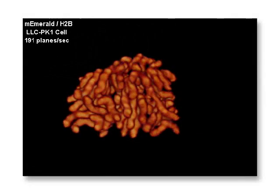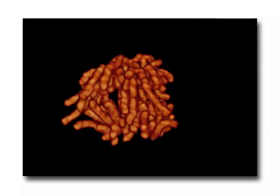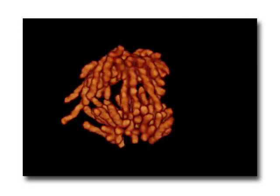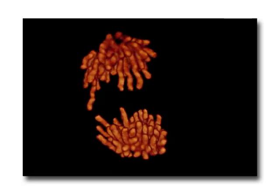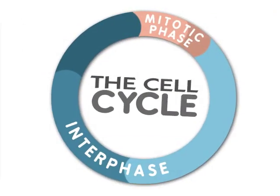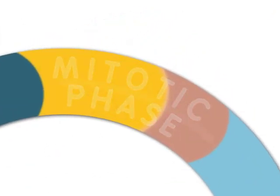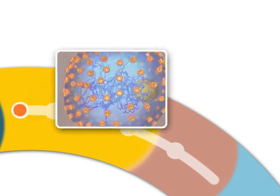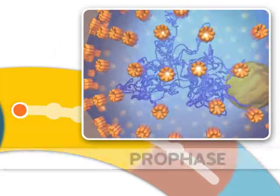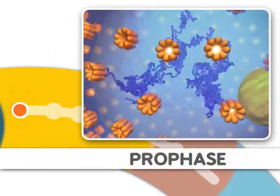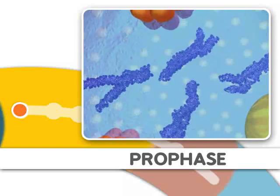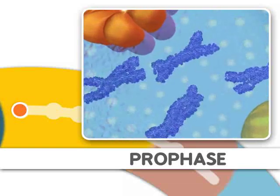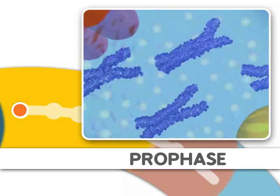Mitosis is the process of dividing the duplicated DNA of a cell into two new nuclei. Mitosis is split into distinct stages. The first stage is prophase, where the DNA condenses, organizes, and the classic chromosome structure appears.